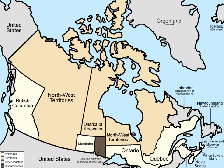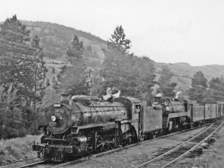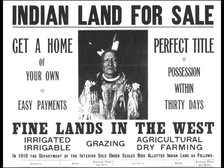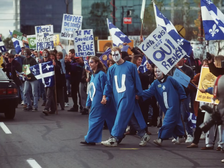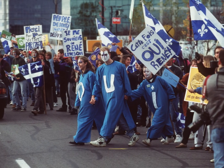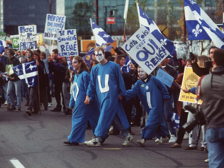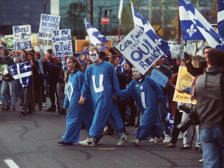Changes that would occur include the creation of a Confederation and a railway being built. Some things that continued to stay the same are the loss of land for the Indigenous and the power of Britain. This case study is relevant today because in Quebec, there are still people who want independence, just like in the Confederation era.